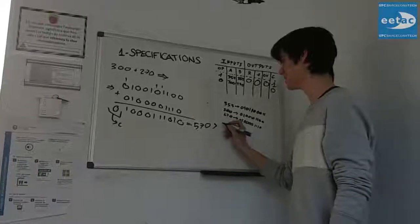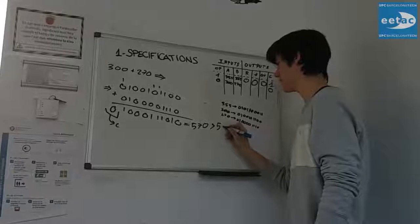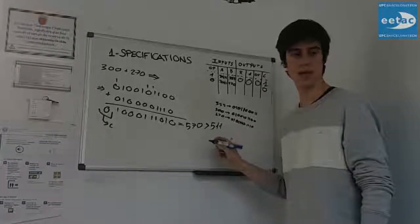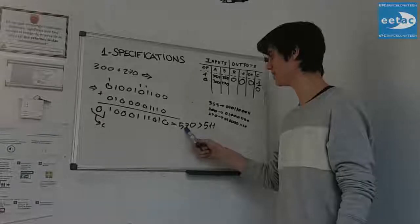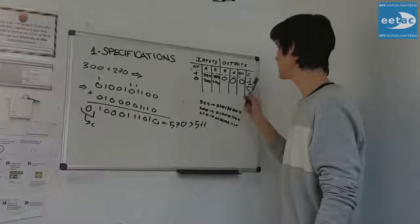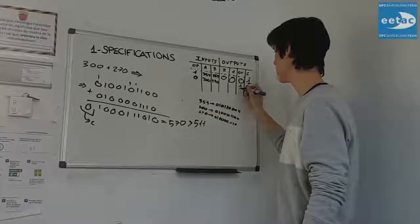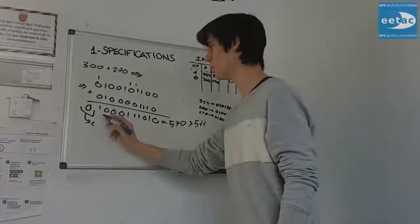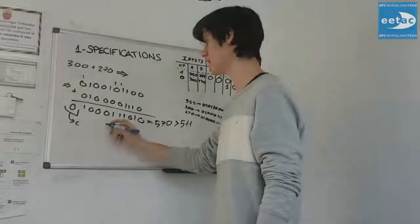This number is 570 in binary. This number is larger than 511. And now we have to make this number negative. We have to invert, and overflow is 1.